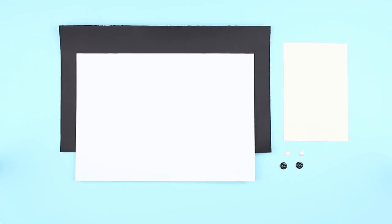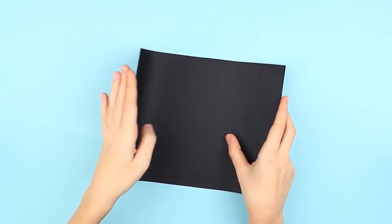For the first card-making idea, we'll need black cardboard, white paper, white cardboard, embellishments, and multipurpose glue. Let's make a man's suit-shaped card.